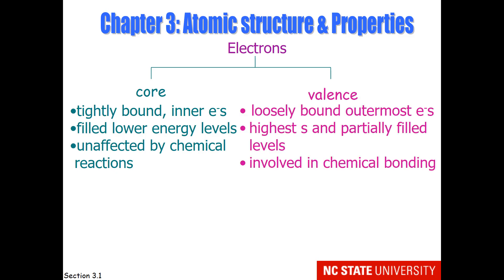Valence electrons do all the heavy lifting. These are the loosely bound outermost electrons. They are composed of the highest S electrons and electrons in partially filled levels. These electrons are involved in chemical bonding and reactions.